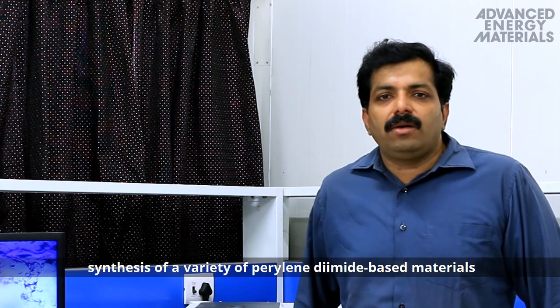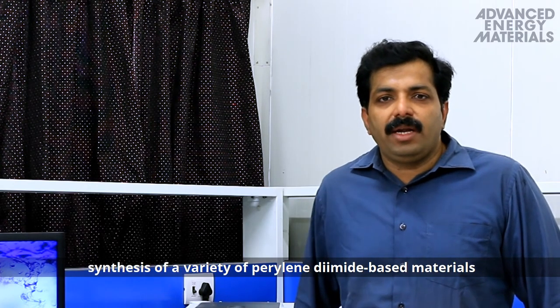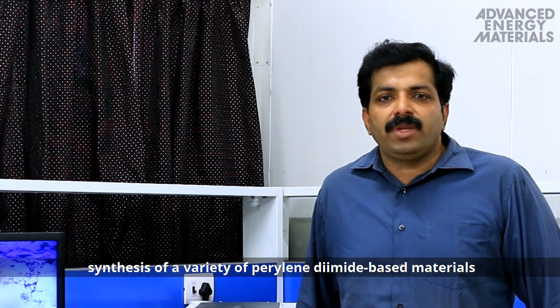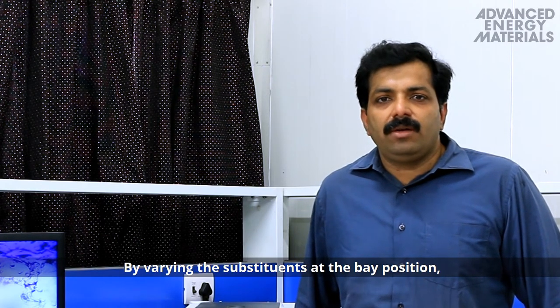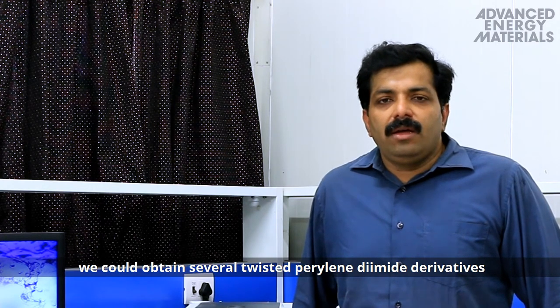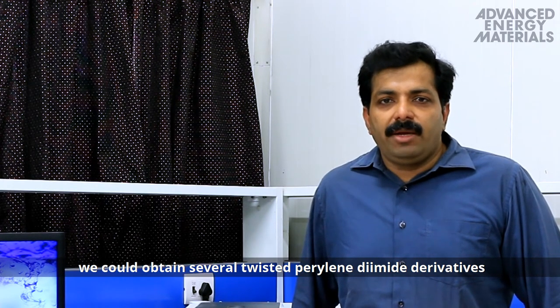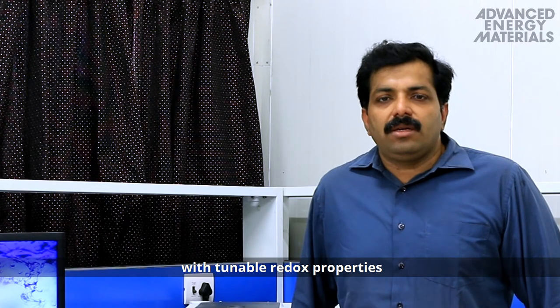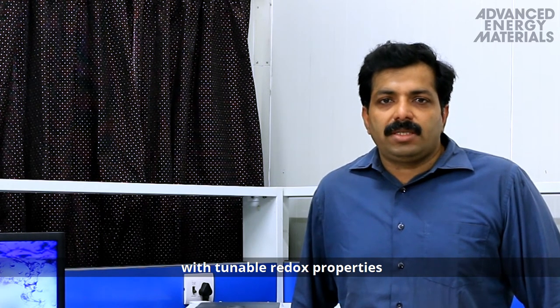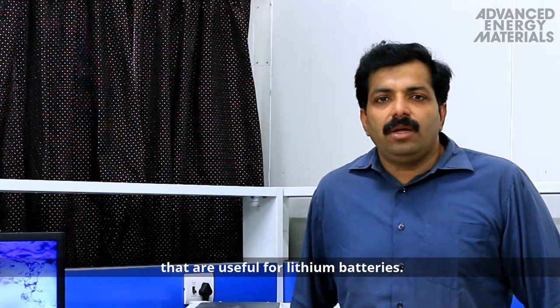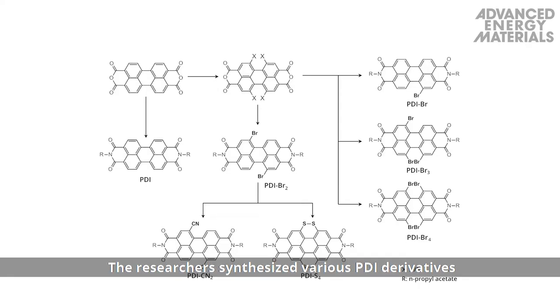Considering the emergence of organic electrode based lithium batteries, our group has been working on synthesis of a variety of perylene diamide based materials for last several years. By varying the substituents at the bay position, we could obtain several twisted perylene diamide derivatives with tunable redox properties that are useful for lithium batteries.